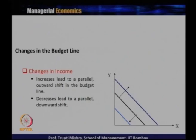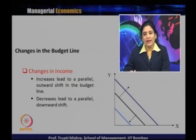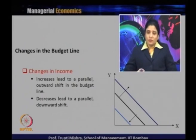Using the indifference curve and the budget line together, we will see how the consumer reaches equilibrium. Before analyzing consumer equilibrium, we consider when the budget line changes. An increase in income leads to a parallel outward shift in the budget line, and a decrease leads to a parallel inward shift — rightward for an increase, leftward for a decrease in income.